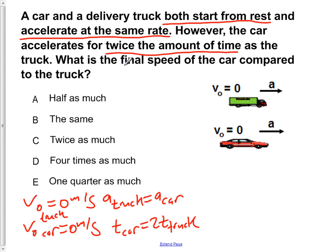Now we want to figure out what is the final speed of the car compared to the truck. So we can simply write out the first kinematic equation. V equals V0 plus AT for the truck.